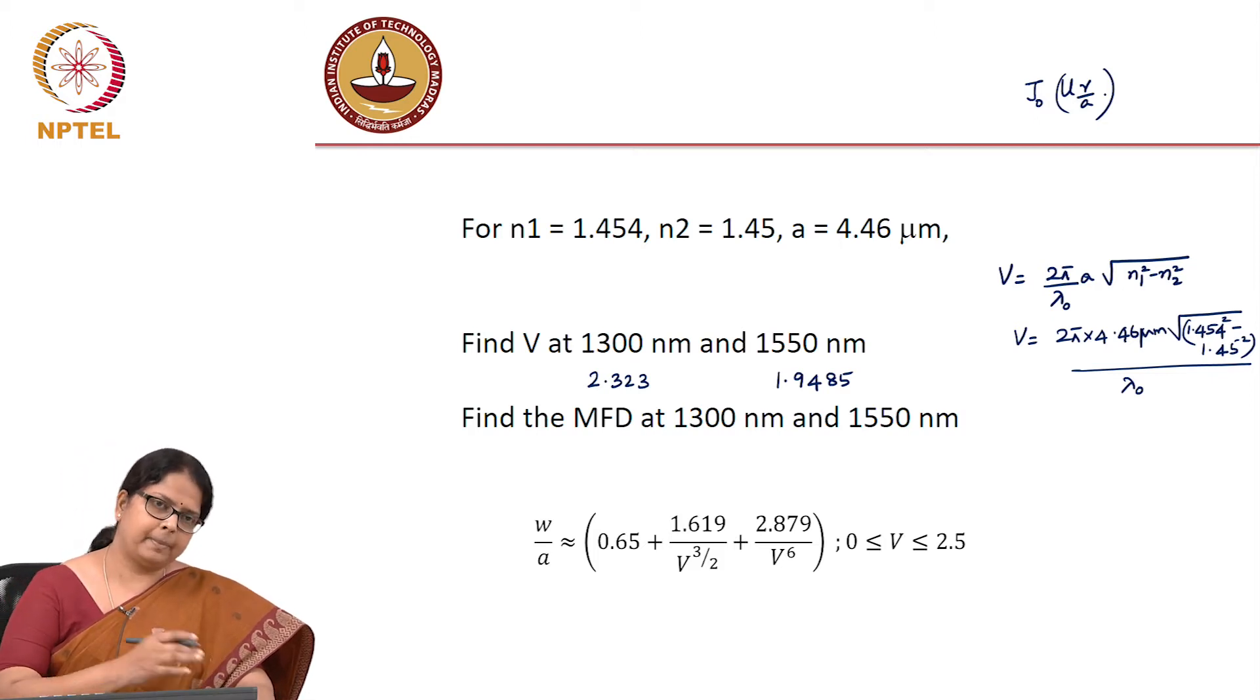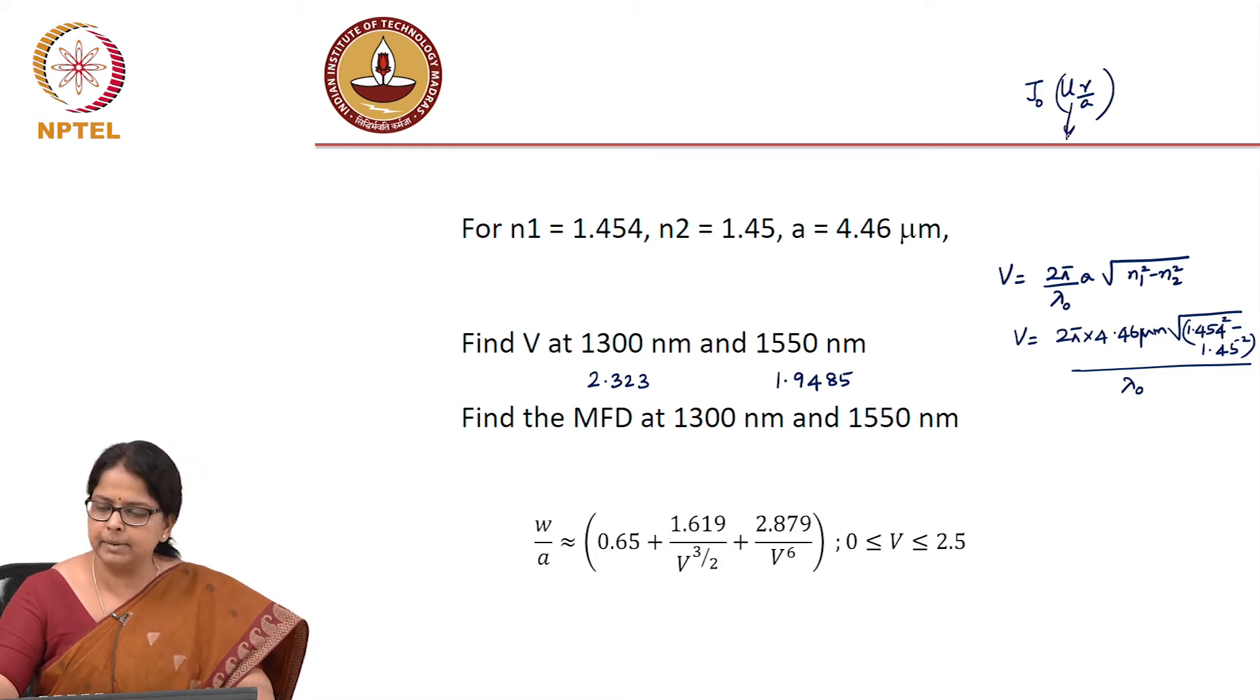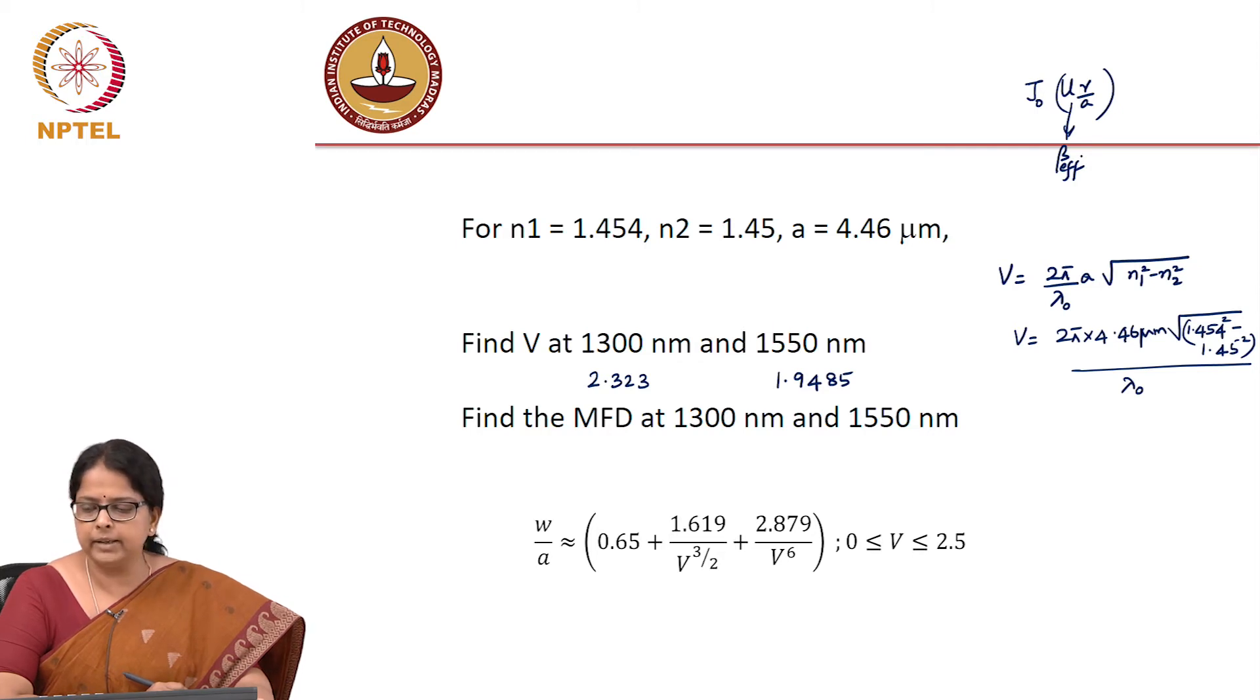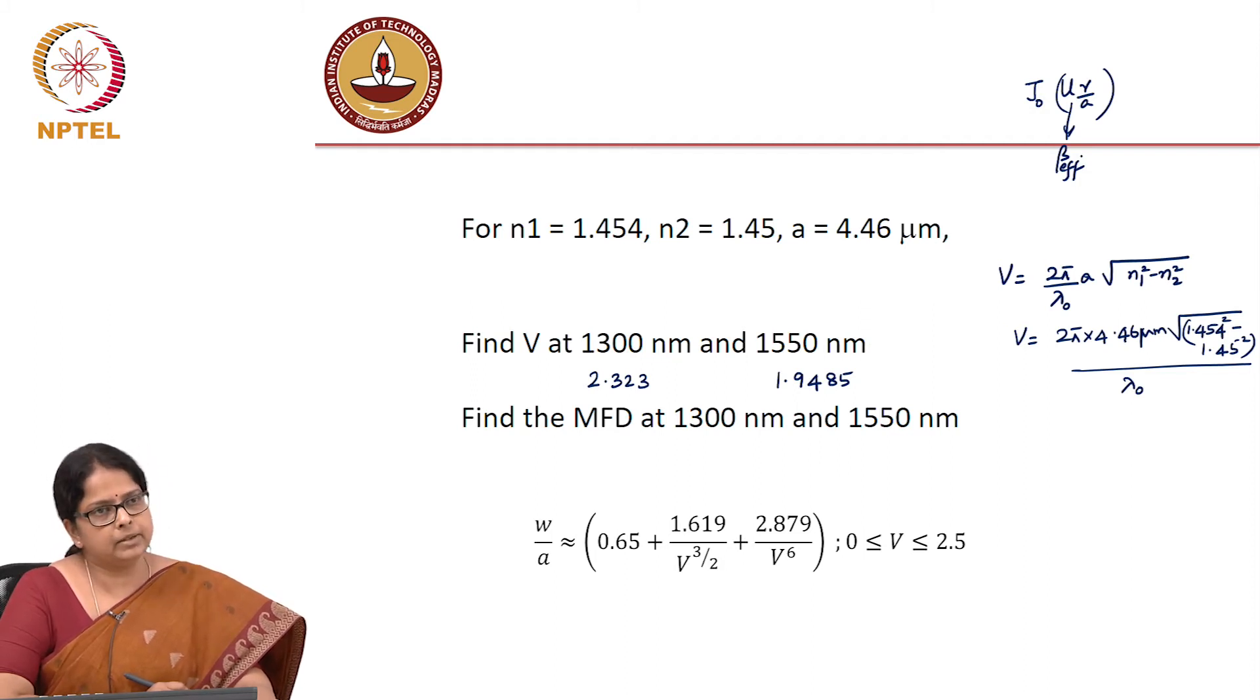So if you do this for different V numbers, different lambdas are characterized by different effective indices, different V numbers. If you calculate this, the fundamental modal profile which is J naught UR by A, and we said this U is dependent on your effective index of the mode, which we are calculating from our B parameter. So if you go ahead and calculate this for different values of lambda, which means in fact, lambda is not the unique parameter that can change. You can change when your effective index changes. Effective index changes can happen either when N1 and N2 change or when A changes or when lambda changes. So that is why we calculate it in terms of V parameter. So whenever V changes,